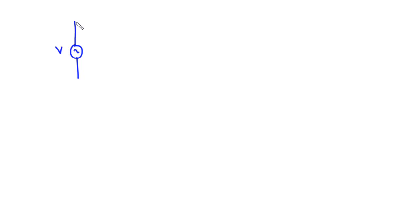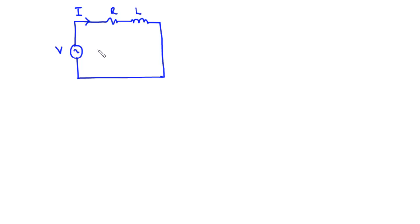Let's move on to a series RL circuit. A series RL circuit is a circuit in which the passive elements — a resistor and an inductor — are connected in series with a supply voltage. Since these two passive elements are connected in series, the same current I flows through both of them. The current through the resistor IR equals the current through the inductor IL, so I = IR = IL.